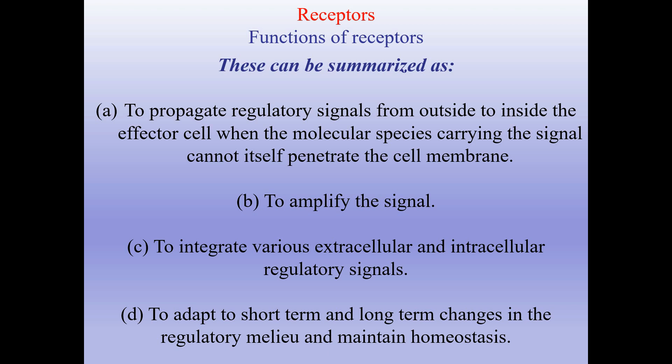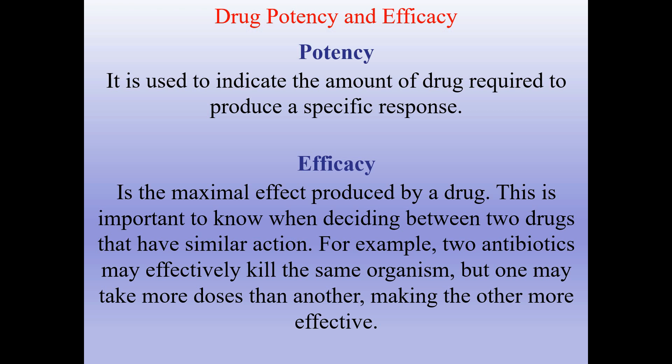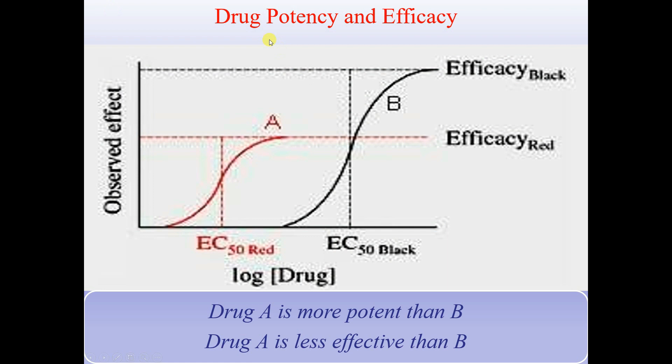Drug potency and efficacy: potency indicates the amount of drug required to produce a specific response. Efficacy is the maximal effect produced by a drug — important when deciding between two drugs with similar action. For example, two antibiotics may effectively kill the same organism, but one may require more doses than another, making the other more effective. On this slide you can see the schematic representation: drug A is more potent than drug B, but drug A is less effective than drug B.